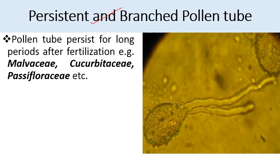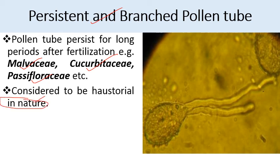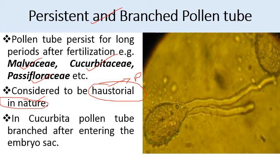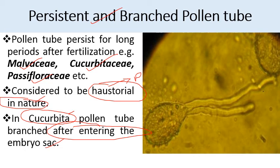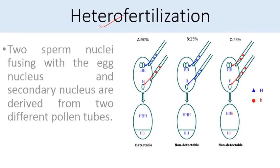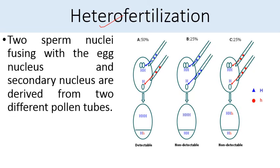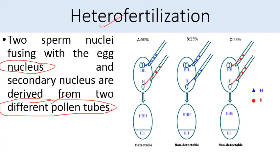Persistent and branched pollen tubes: the pollen tube persists for a long period after fertilization in some cases, like in Malvaceae, Cucurbitaceae, and Papaveraceae. These are considered to be haustorial in nature, meaning the pollen tube acts as a haustorial structure - a parasitic structure which can absorb nutrition. In Cucurbita, the pollen tube is branched after entering the embryo sac. Heterofertilization occurs when two sperm nuclei fusing with the egg nucleus and secondary nucleus are derived from two different pollen tubes. The content of one pollen tube fuses with the egg, and the content of the other pollen tube fuses with the secondary nuclei.